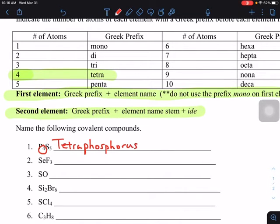And then five is penta. S is sulfur, and the ending changes to ide, so instead of pentasulfur it becomes pentasulfide. So that was tetraphosphorus pentasulfide.